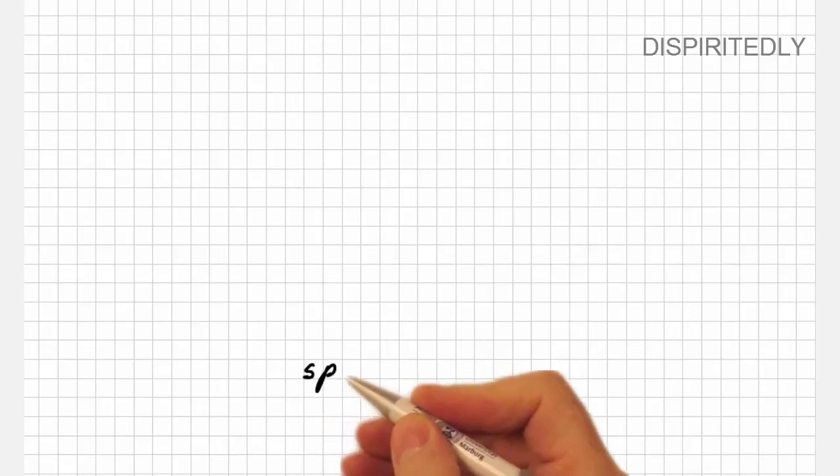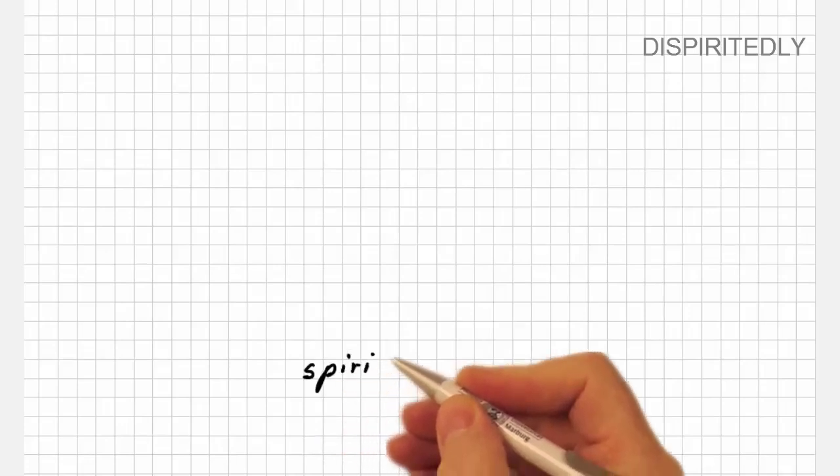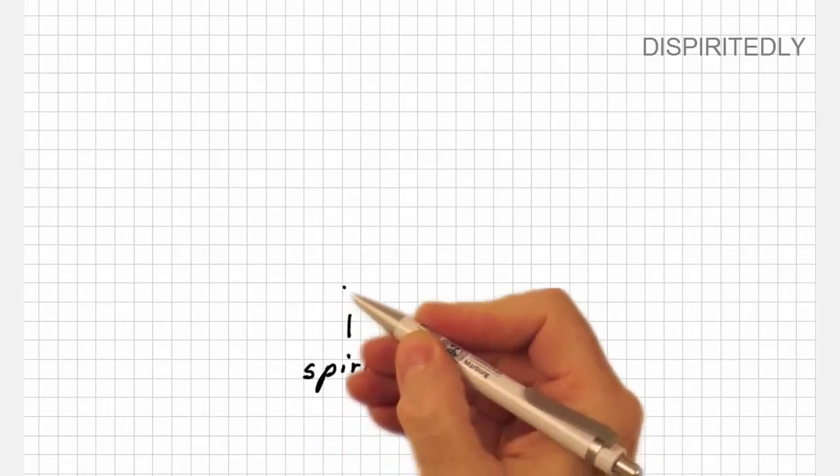Let's analyze dispiritedly. Clearly, the base form is spirit, which is of course a noun.